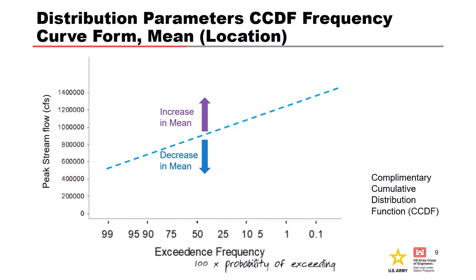So a change in the mean moves the frequency curve either up or down. Does that make sense? Increase in mean we go up, decrease in mean we move our curve down.